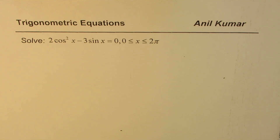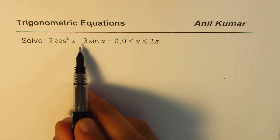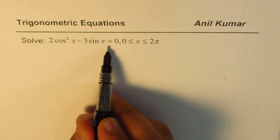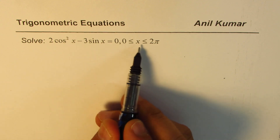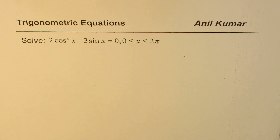I'm Adil Kumar, sharing with you the solution of a trigonometric equation in quadratic form. We need to solve 2cos²x minus 3sinx equals 0, where x is between 0 to 2π. You can always pause the video, answer the question, and then look into my suggestions.